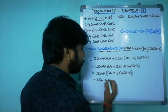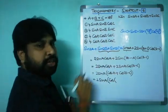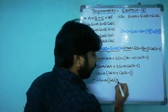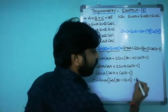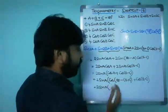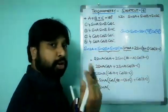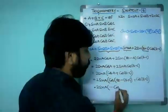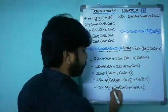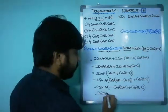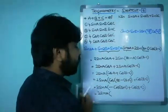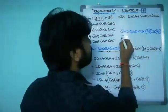Now since A equals 180 minus (B+C), we substitute: cos A becomes cos(180−(B+C)), which in the second quadrant gives minus cos(B+C). So the bracket becomes minus cos(B+C) plus cos(B−C). Recognizing the formula for cos C minus cos D, we apply it to this expression.